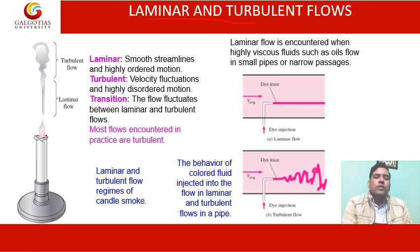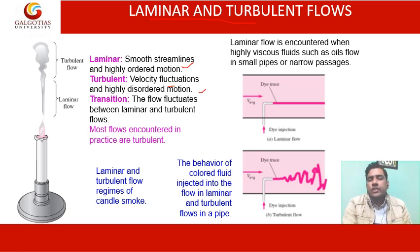Laminar flows are those where the streamlines are smooth and highly ordered. In turbulent flow, velocity fluctuations are present and the fluid motion is highly disordered. In transition flow, the flow fluctuates between laminar and turbulent. Most flows encountered in practice are turbulent, and as shown in the figure, the flow varies from laminar to turbulent.